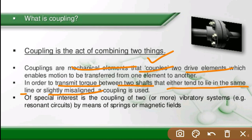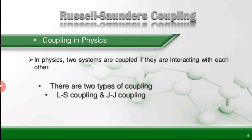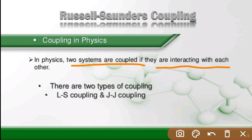Of special interest is the coupling of two vibrating systems, for example a resonant circuit by means of a spring or magnetic field. In physics, two systems are coupled if they are interacting with each other. There are two types of coupling in physics: LS coupling and JJ coupling.